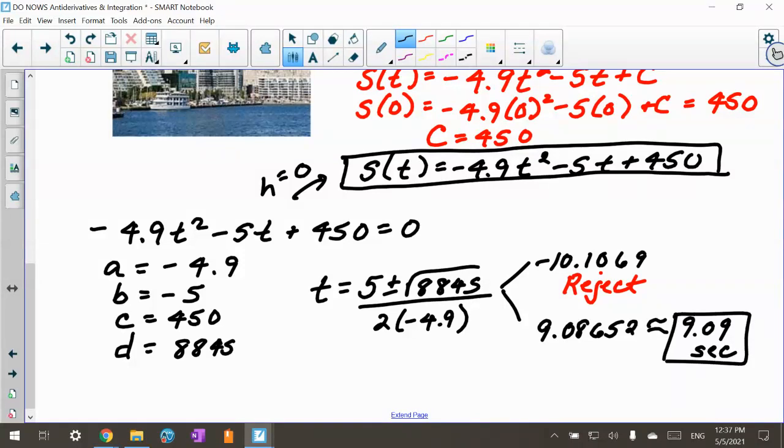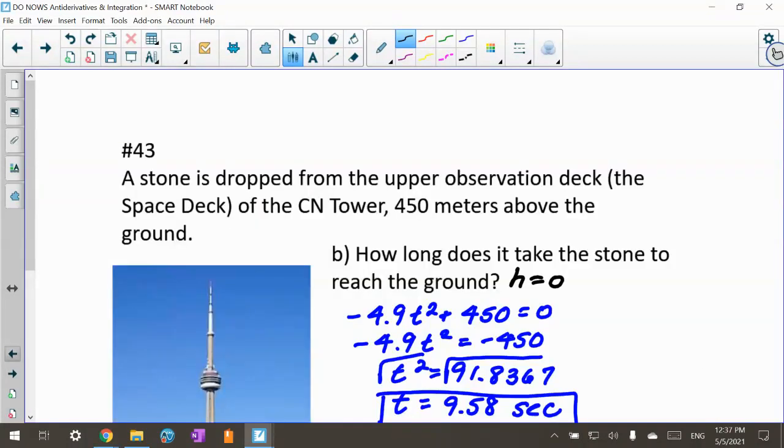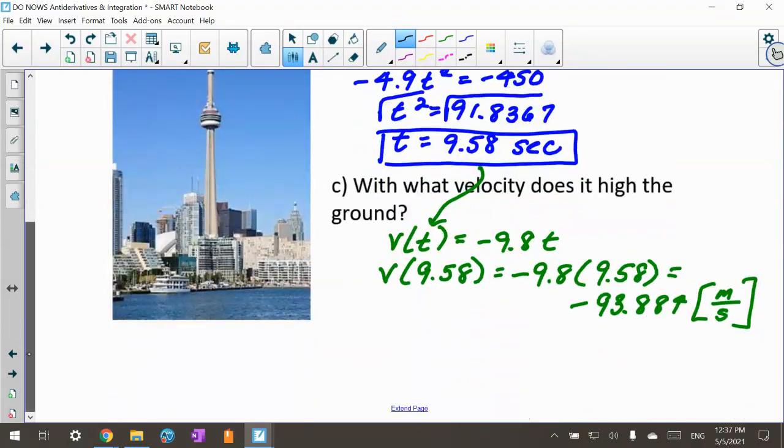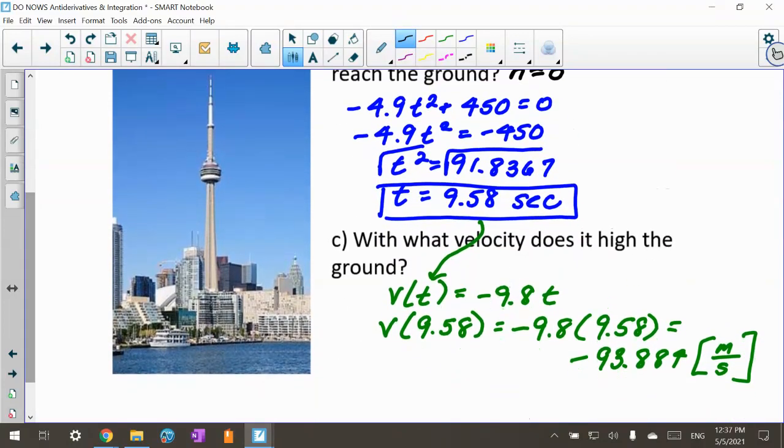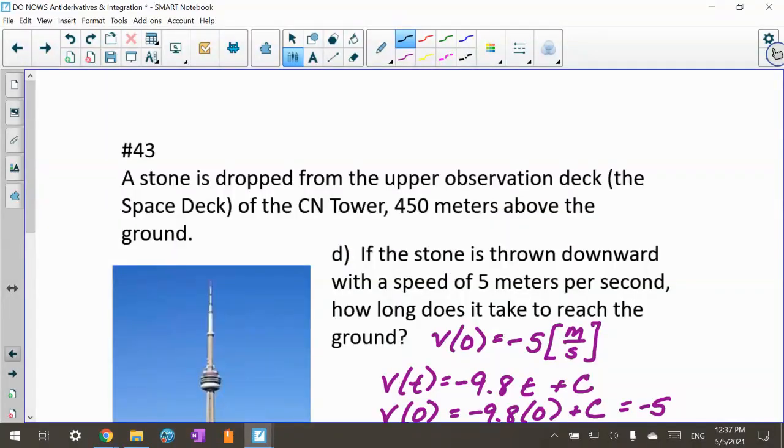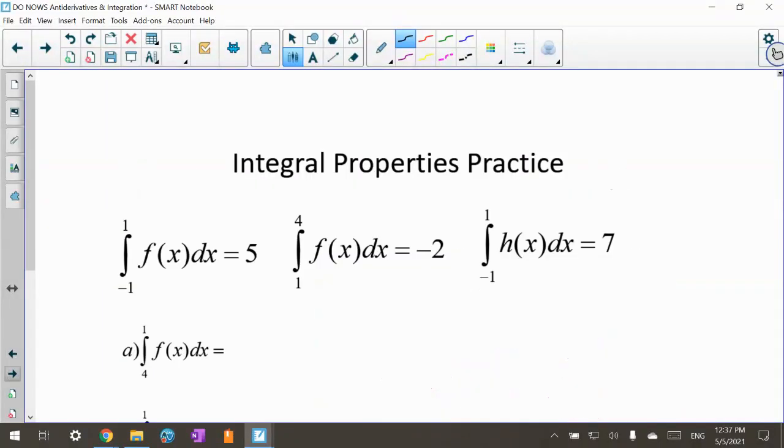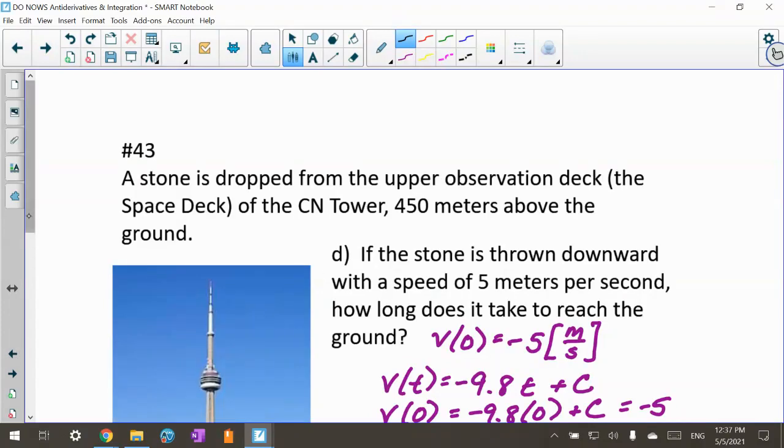How does this compare from just dropping it? It took 9.09 seconds to hit the ground when I threw it with some velocity. When I just dropped it, it took 9.58 seconds. So I did get to the ground a little bit quicker. That's interesting as well, and that's it for this one problem.